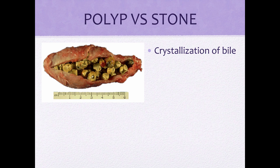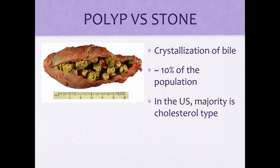Gallstones are formed from crystallization of bile and occur in approximately 10% of the population. In the US, 75 to 80% of gallstones are of the cholesterol type.